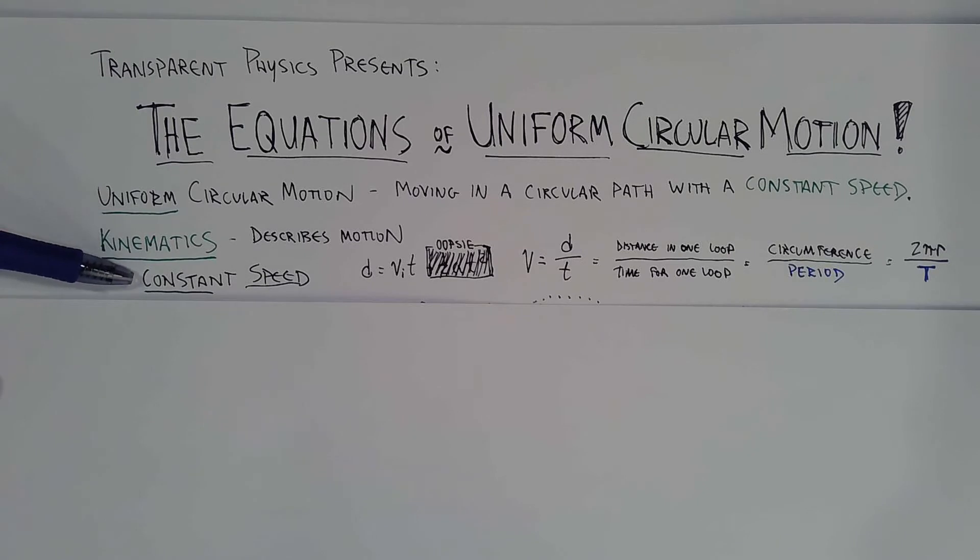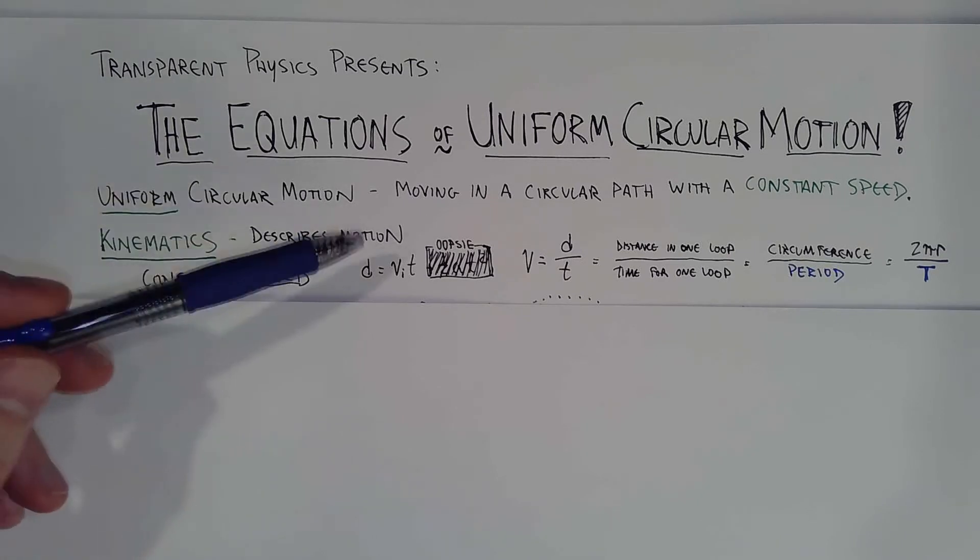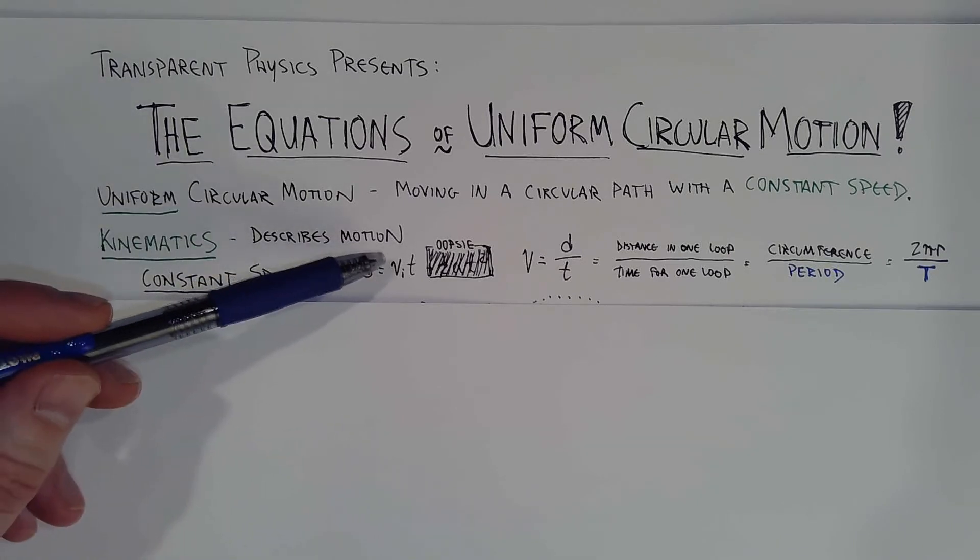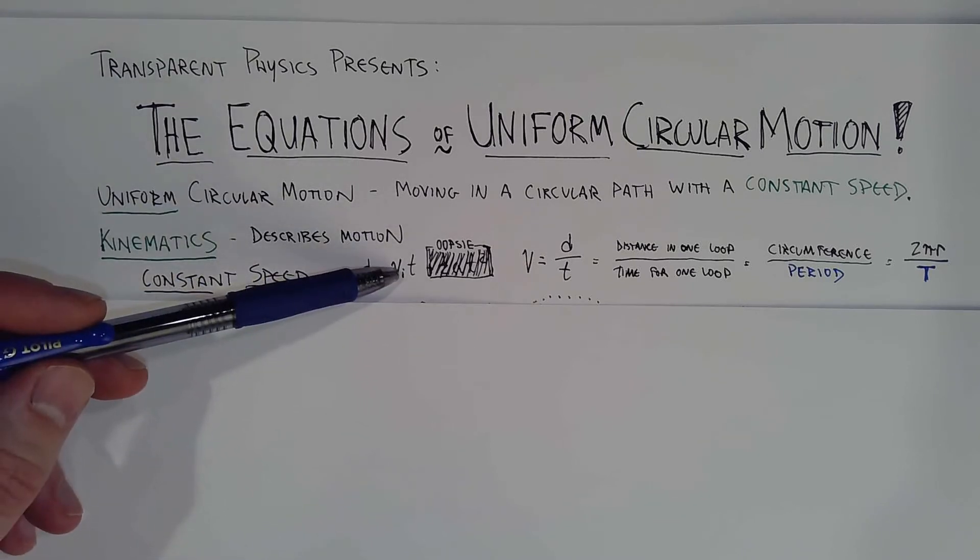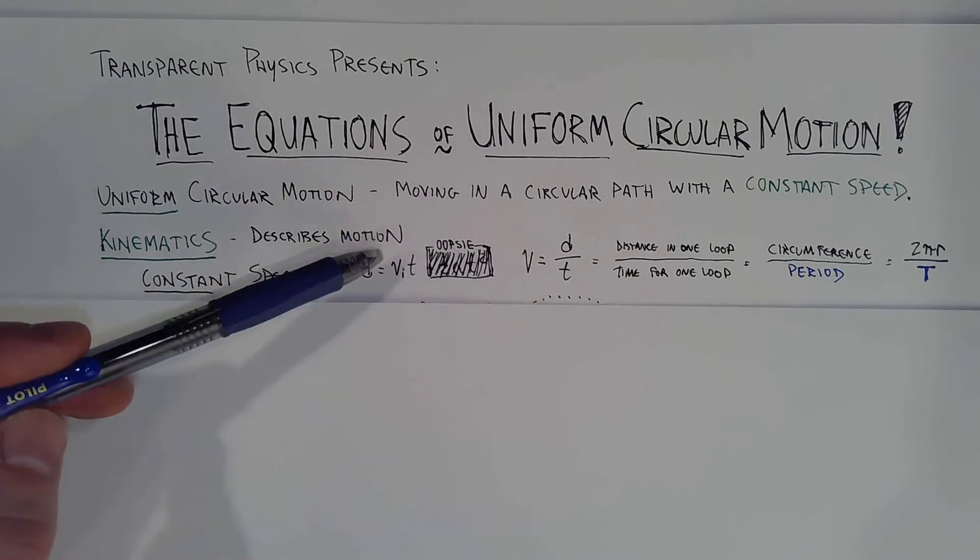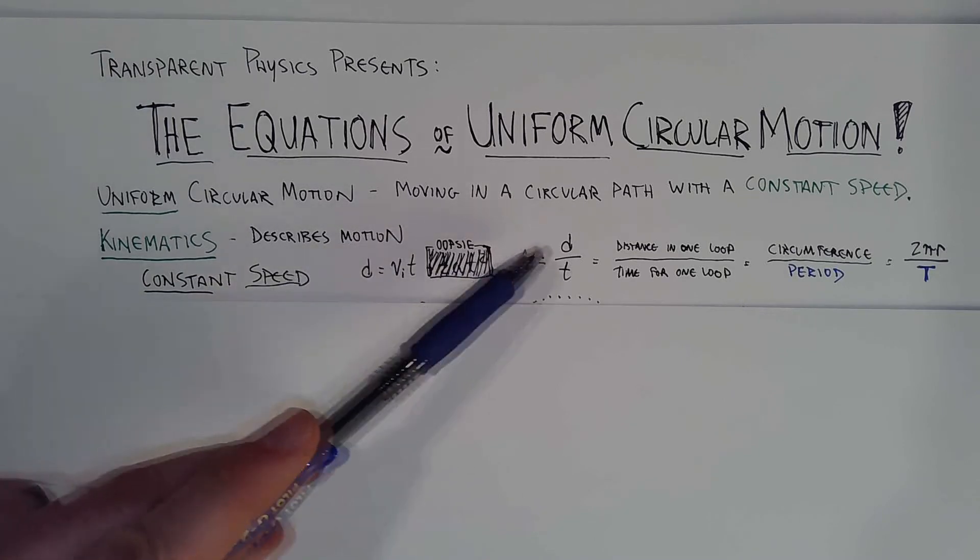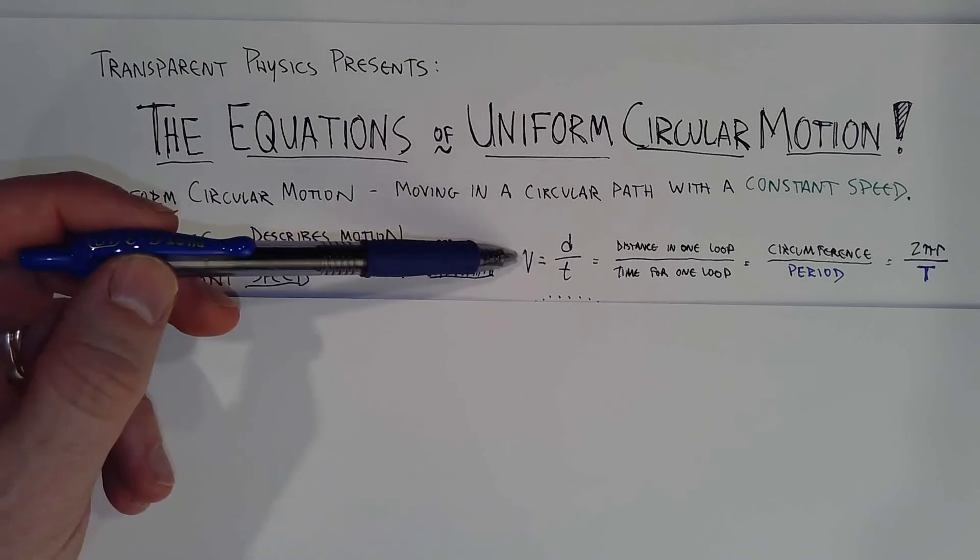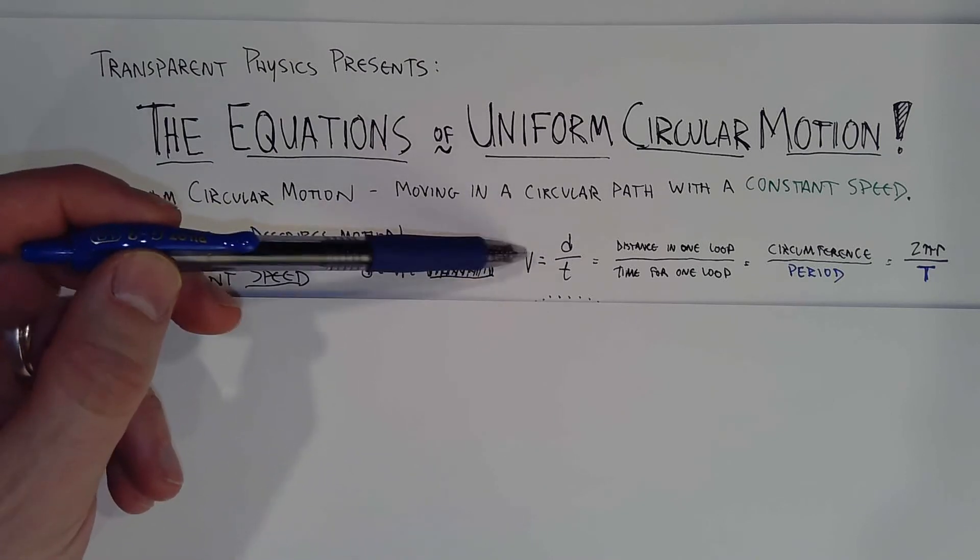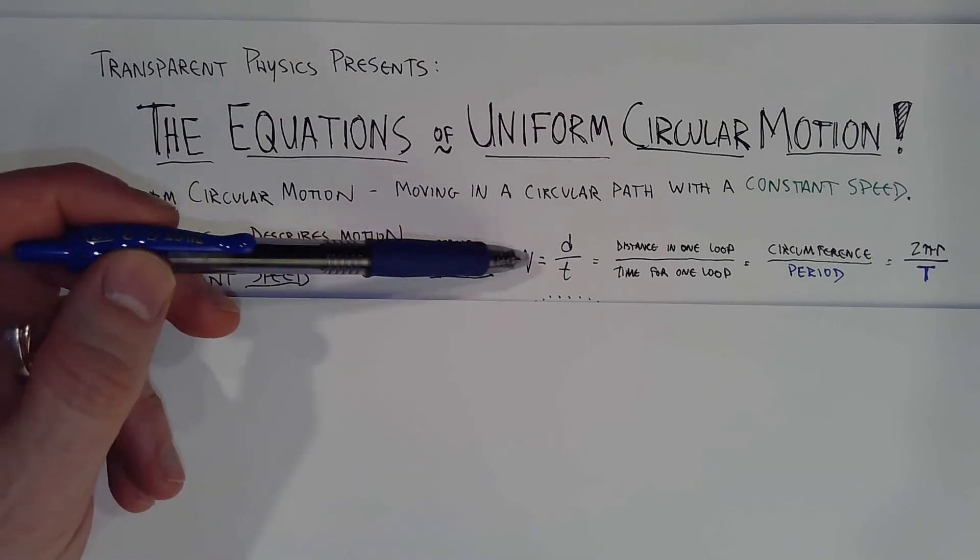If we argue that the speed is constant, the speed is d equals vt or v_i t, the initial velocity. But if the velocity doesn't change, we can just turn it to v. If we manipulate this equation to solve for v, we divide both sides by t. So we're left with this equation, v equals d over t.